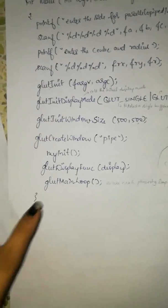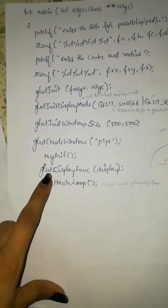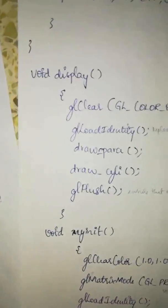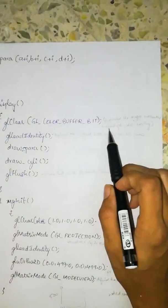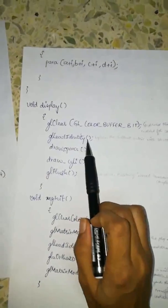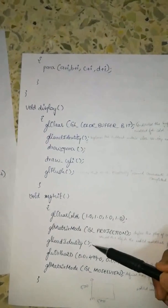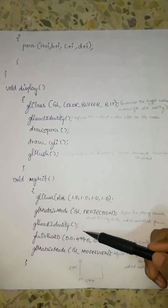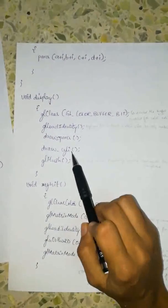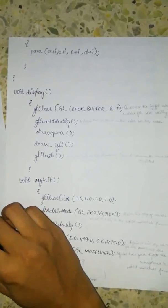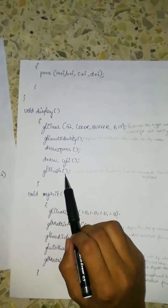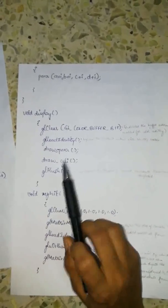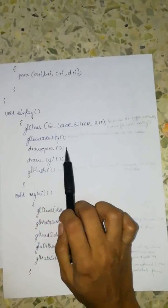The next function is glut_display_func(display). In void display, gl_clear(GL_COLOR_BUFFER_BIT) is called — GL_COLOR_BUFFER_BIT indicates the buffer currently enabled for color writing. Then gl_load_identity is called again. draw_para and draw_cylinder are the two functions used here, which we will look into further. Finally, gl_flush ensures that all previously issued commands have been completed. Now let us look into the two functions draw_para and draw_cylinder.